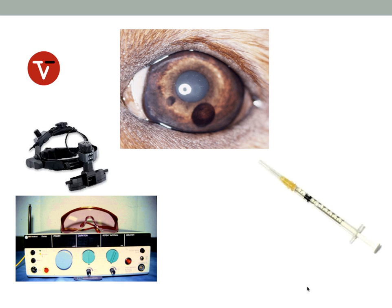With respect to treatment, oftentimes we don't treat these unless we feel that they are interfering with vision, which is rare, or if we feel that the patient is at risk for developing issues with intraocular pressure because of multiple cysts being present. In those instances we can elect to treat those either by aspirating these cystic lesions using some magnification to assist us, or the use of a laser to basically rupture the cysts within the eye. Many of these go untreated, but we do have these resources available if it's deemed appropriate for the patient.